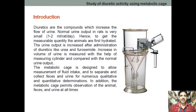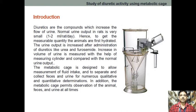Diuretics are substances which increase the flow of urine. If we consider the rat, it has a very small urine output — for example, 1 to 2 ml per rat per day. Therefore, whenever we are doing the experiment with the animal, it is very important that we measure the urine properly so that we can get the result.